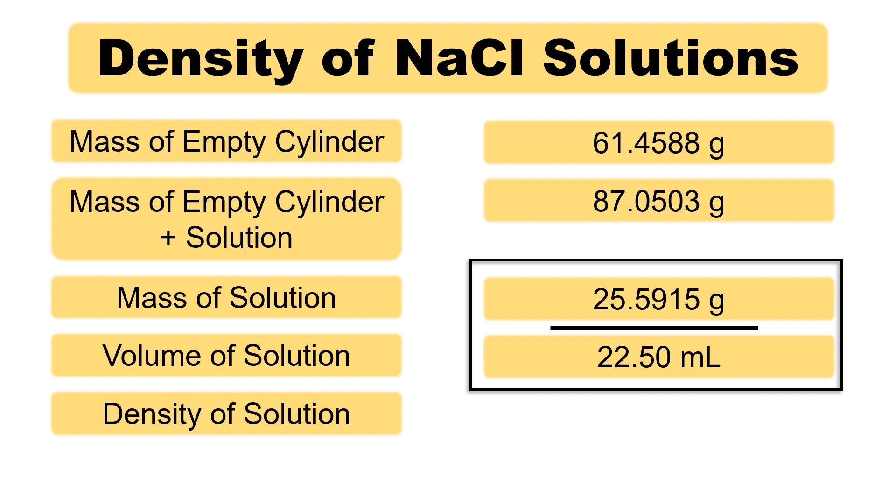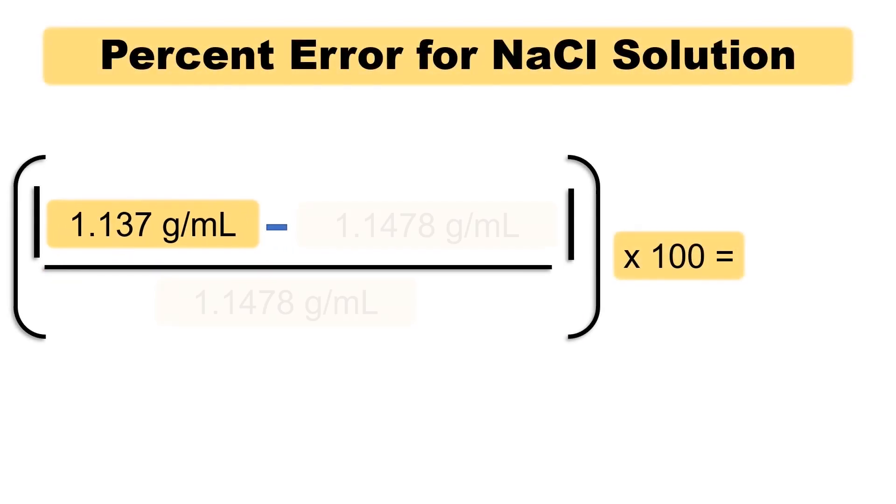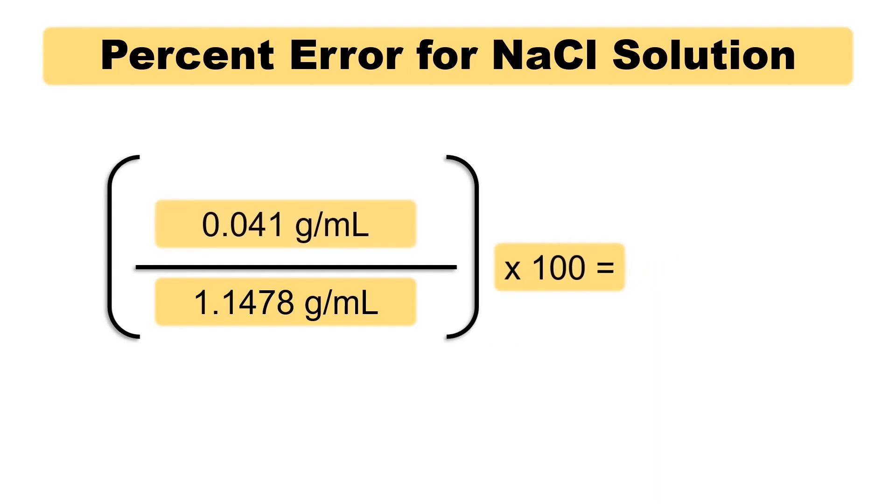We calculate a density of 1.137 grams per milliliter. The accepted value is 1.1478 grams per milliliter, according to the CRC handbook. This is about a 3.6% error. Again, less than 5%, which is acceptable.